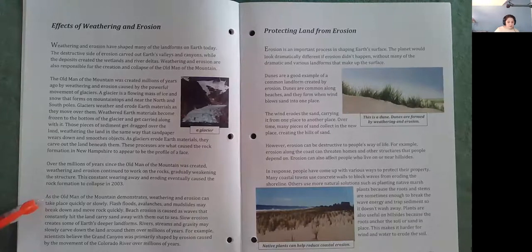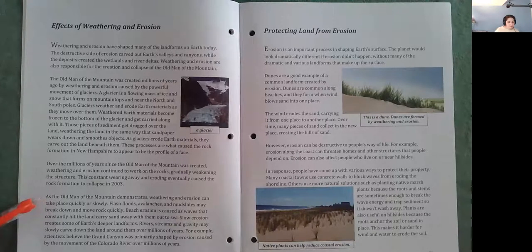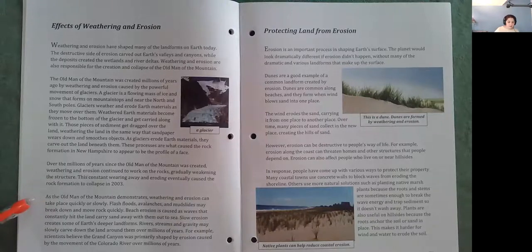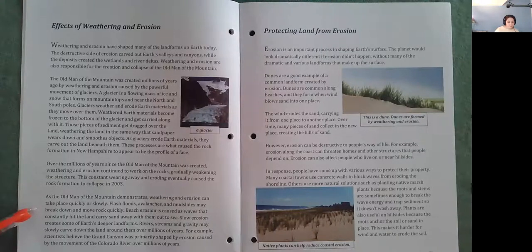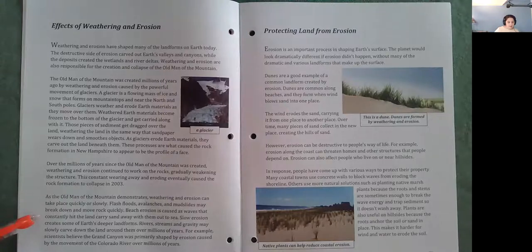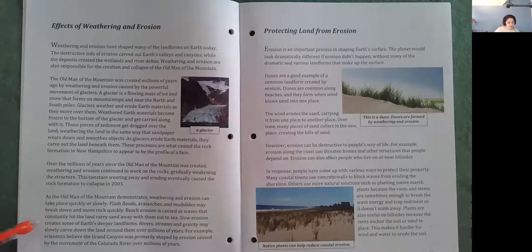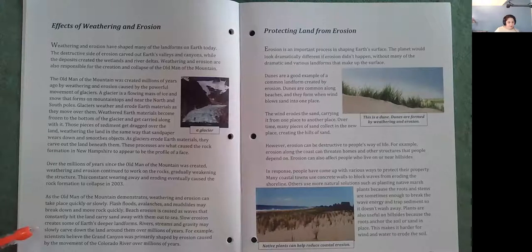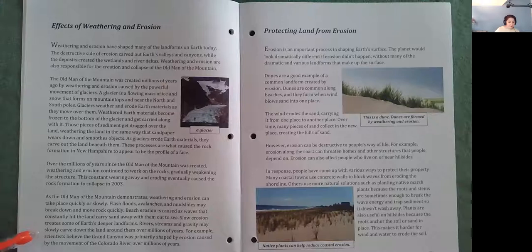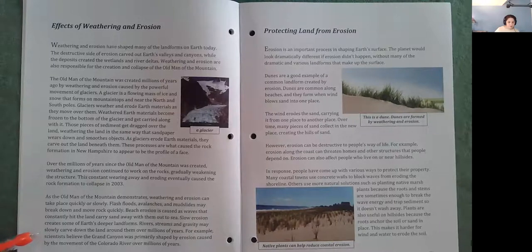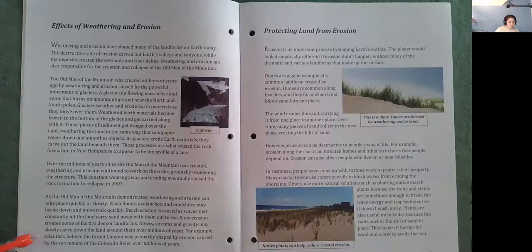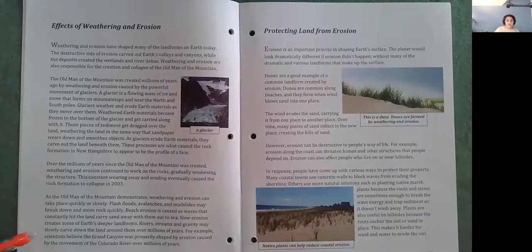As the Old Man of the Mountain demonstrates, weathering and erosion can take place quickly or slowly. Flash floods, avalanches, and mudslides may break down and move rock quickly. Beach erosion is caused as waves that constantly hit the land carry sand away with them out to sea. Slow erosion creates some of earth's deeper landforms. Rivers, streams, and gravity may slowly carve down the land around them over millions of years. For example, scientists believe the Grand Canyon was primarily shaped by erosion caused by the movement of the Colorado River over millions of years.